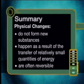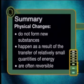Let's summarize what we have found out about physical changes, starting with our everyday observations. We call things that we observe macroscopic properties. Remember, observations are things we notice with all of our senses, not just our eyes. We found that physical changes do not form new substances and happen as a result of the transfer of relatively small quantities of energy. We do not see flames or hear explosions. And physical changes are often reversible. On a microscopic level, during physical change, particles change the way they are arranged because the intermolecular forces between them change.